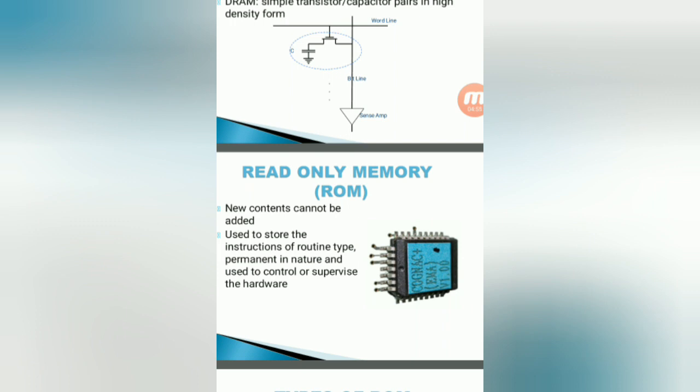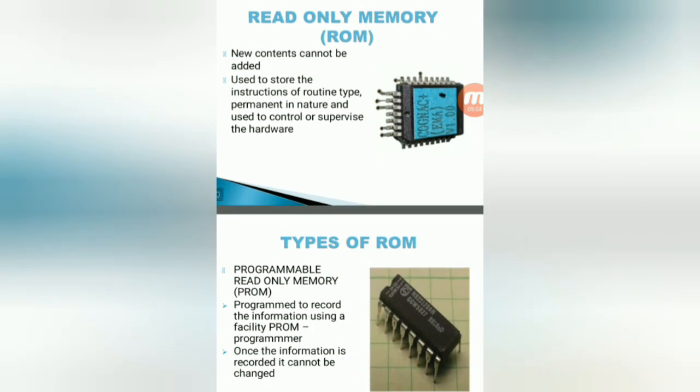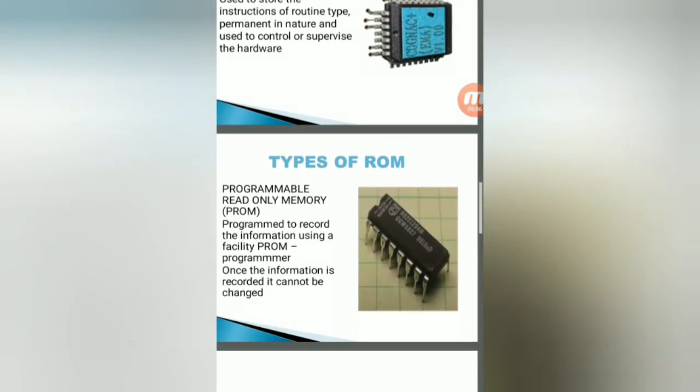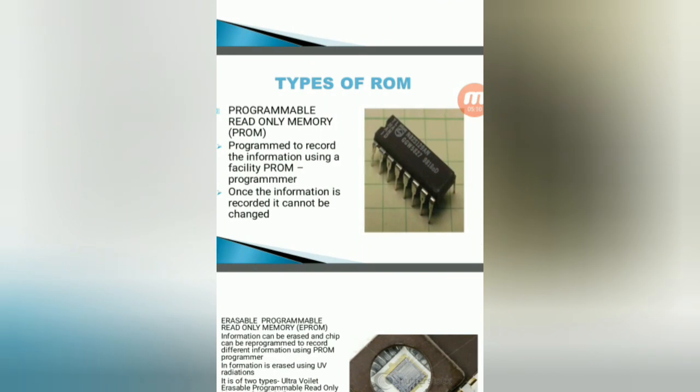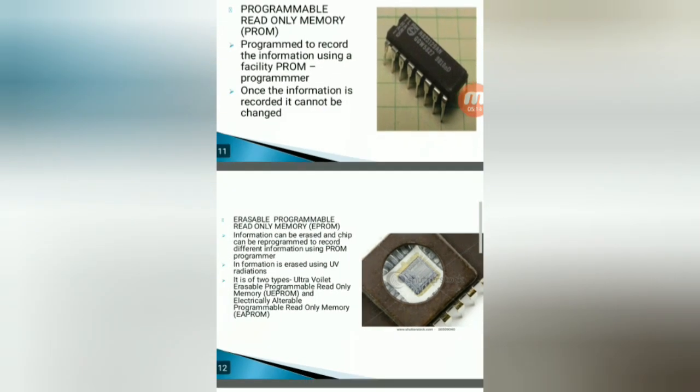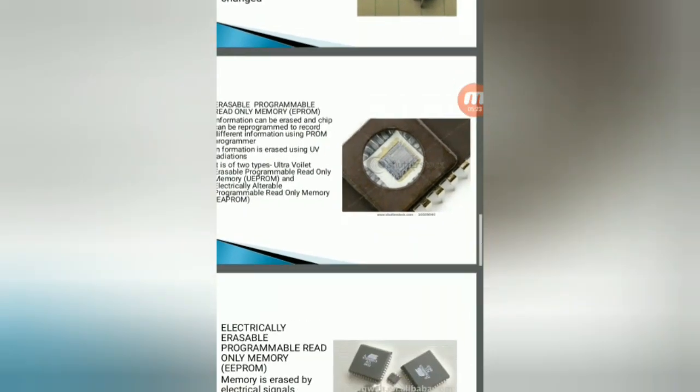Next we go for ROM, read-only memory. In this, only you can read the data, we can't write the data into the memory. So the types of ROM are: programmable read-only memory, erasable programmable ROM, and electrically erasable programmable memory. In case of programmable read-only memory, once the information is recorded it cannot be changed. Erasable means we can change or erase the data based on our requirement, either electrically or using ultraviolet rays.